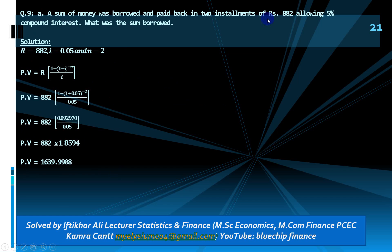Question 9: a sum of money was borrowed and paid back in two installments of rupees 882, allowing 5% compound interest. What was the sum borrowed? This is a case of multiple payments. The present value is unknown; installment R = 882, interest rate i = 0.05, number of payments n = 2. Apply the formula: PV = R × [1 − (1 + i)^(−n)] / i. The present value is rupees 1639.99.